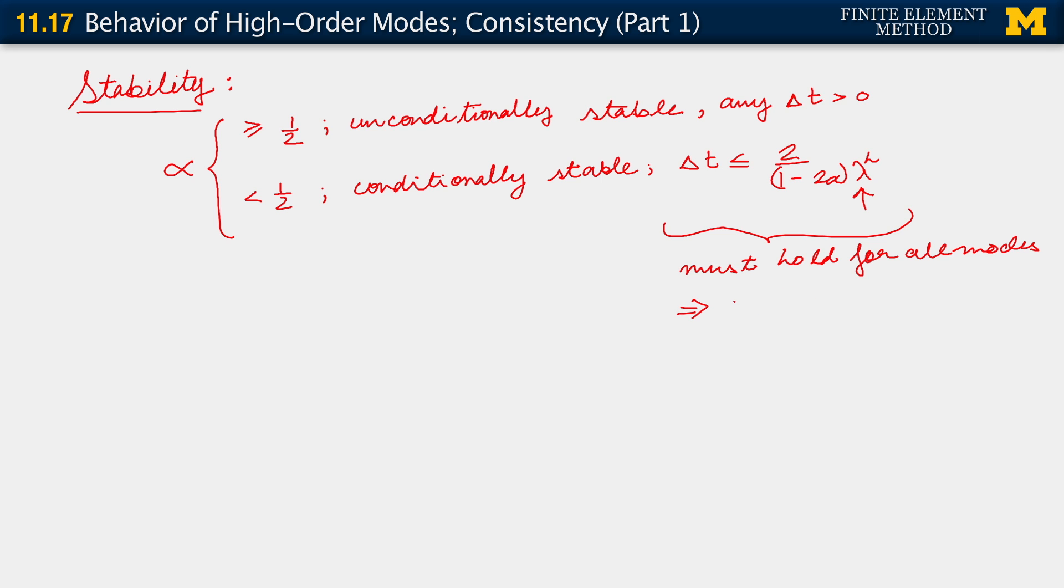Consequently, what we want to look at is this condition for the maximum eigenvalue. This implies that really the kind of condition we must work with for our matrix vector problem is that delta t is less than or equal to 2 over 1 minus 2 alpha lambda h max, the maximum eigenvalue over all modes.